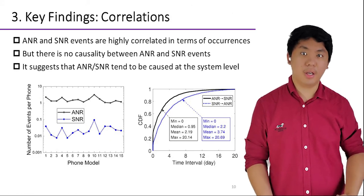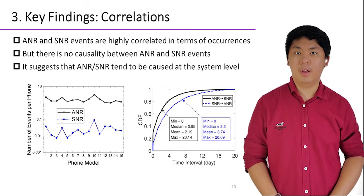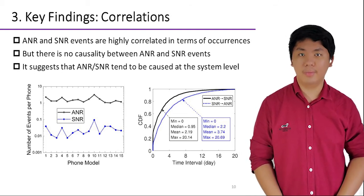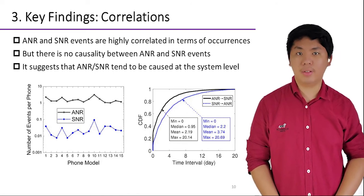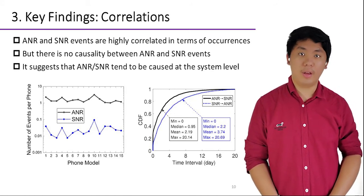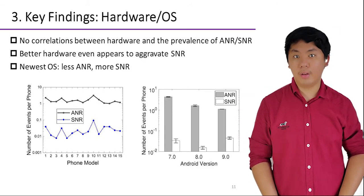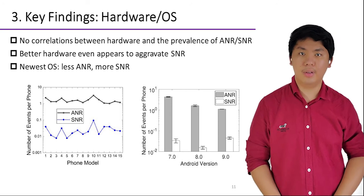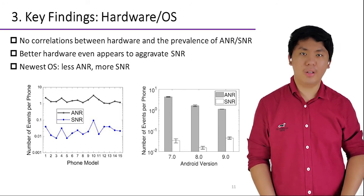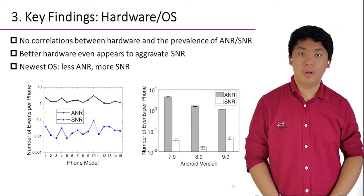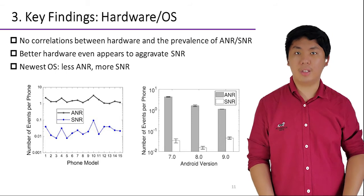Further, we find that ANR and SNR events are highly correlated in terms of occurrences. At first glance, this high correlation indicates that an SNR event is likely caused by an ANR event. However, by examining the time intervals of adjacent events, we find there is no causality between ANR and SNR, suggesting that both tend to be caused at the system level. Surprisingly, we also find that better hardware does not improve responsiveness — there are no correlations between hardware and the prevalence of ANR and SNR. Better hardware even appears to aggravate SNR, clearly indicating that ANR and SNR are not a hardware issue.